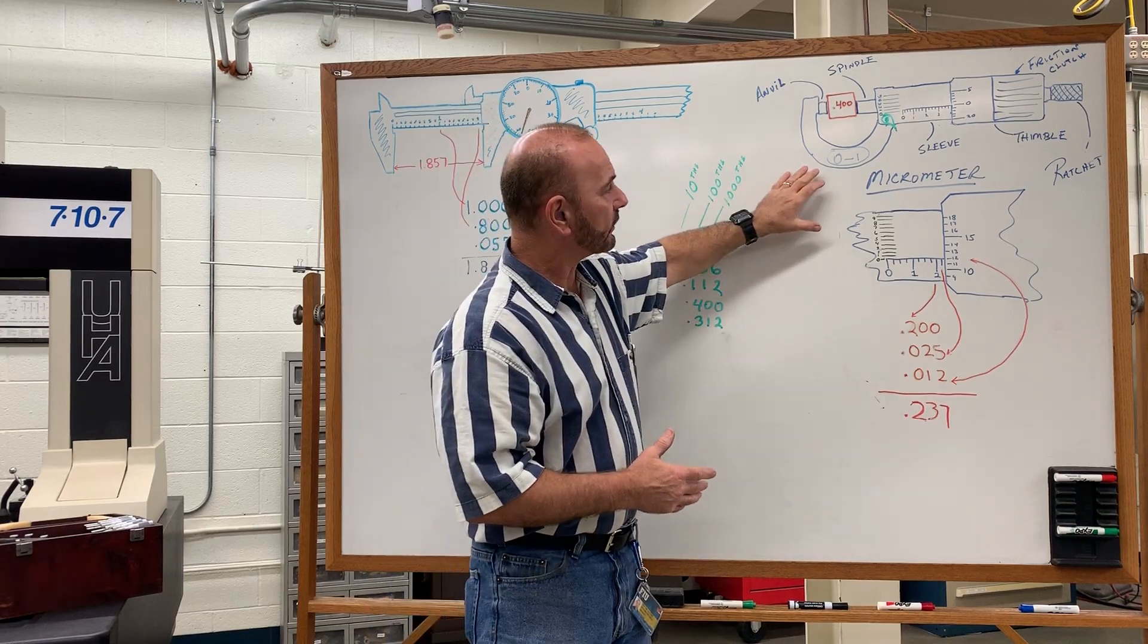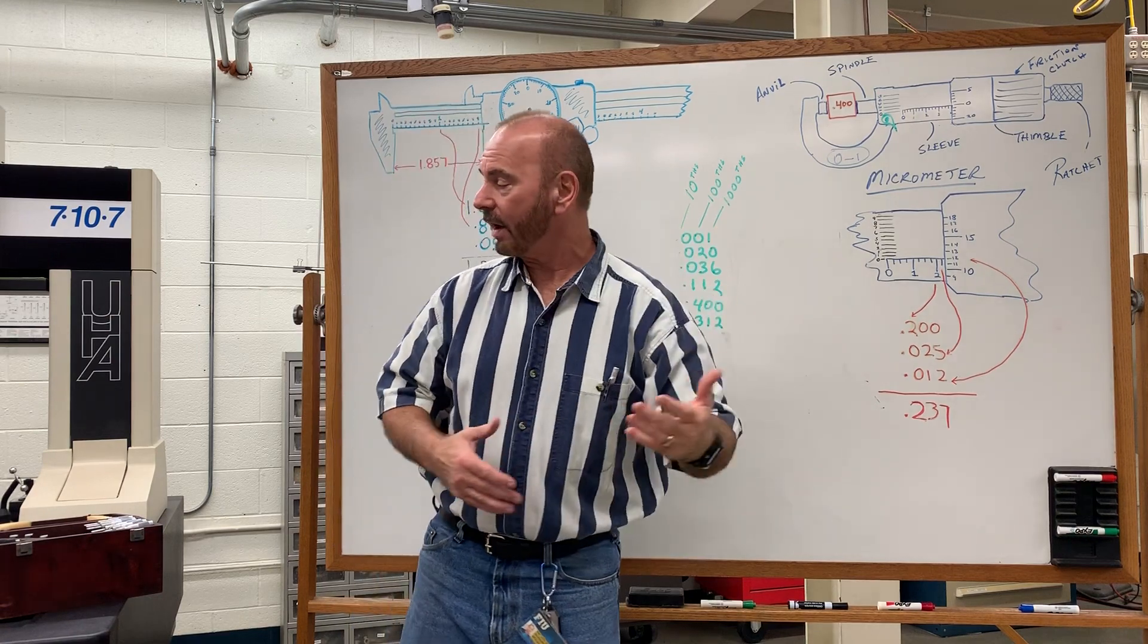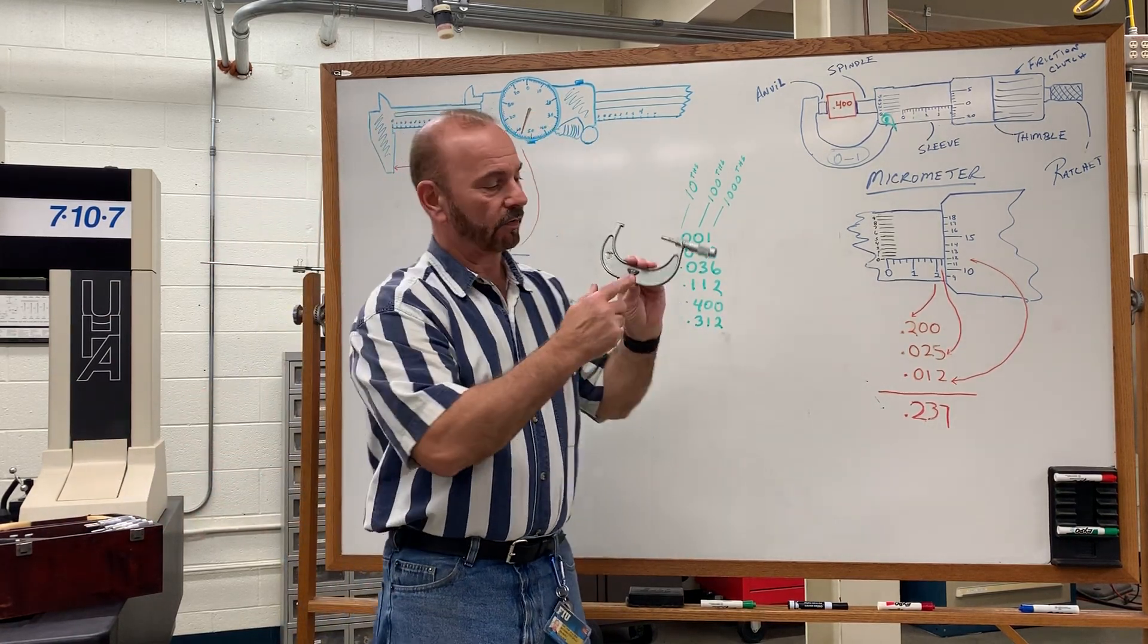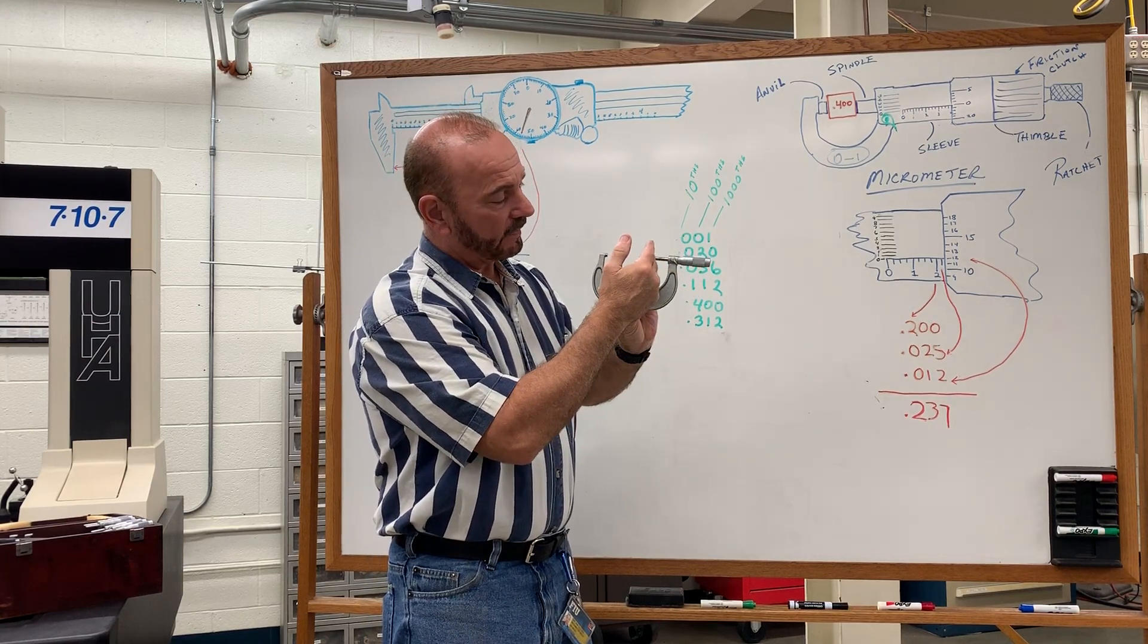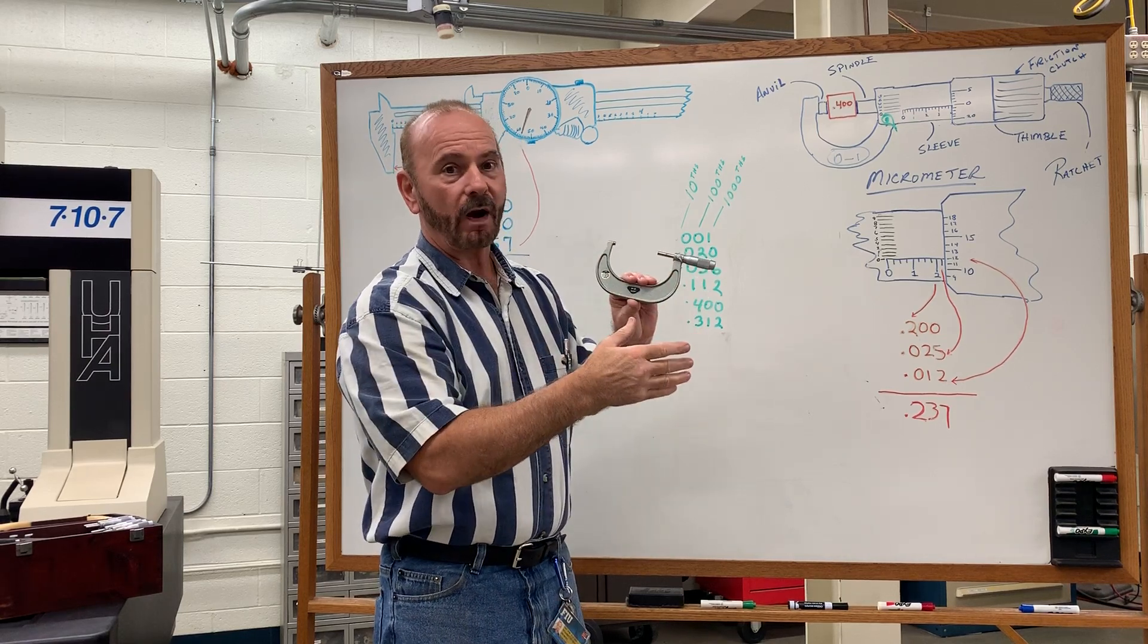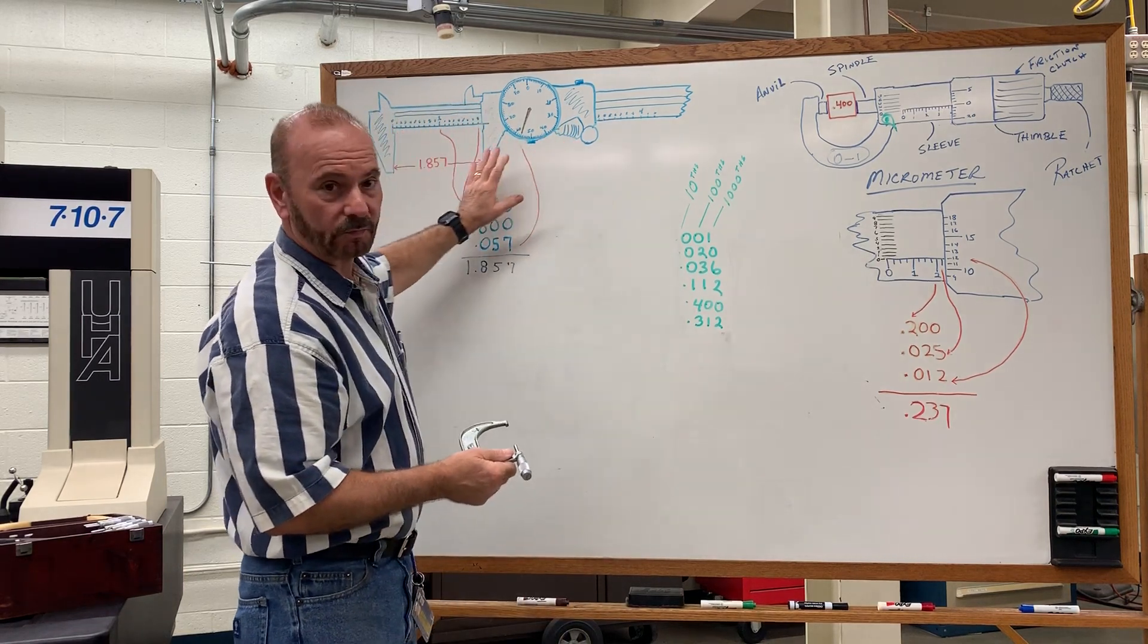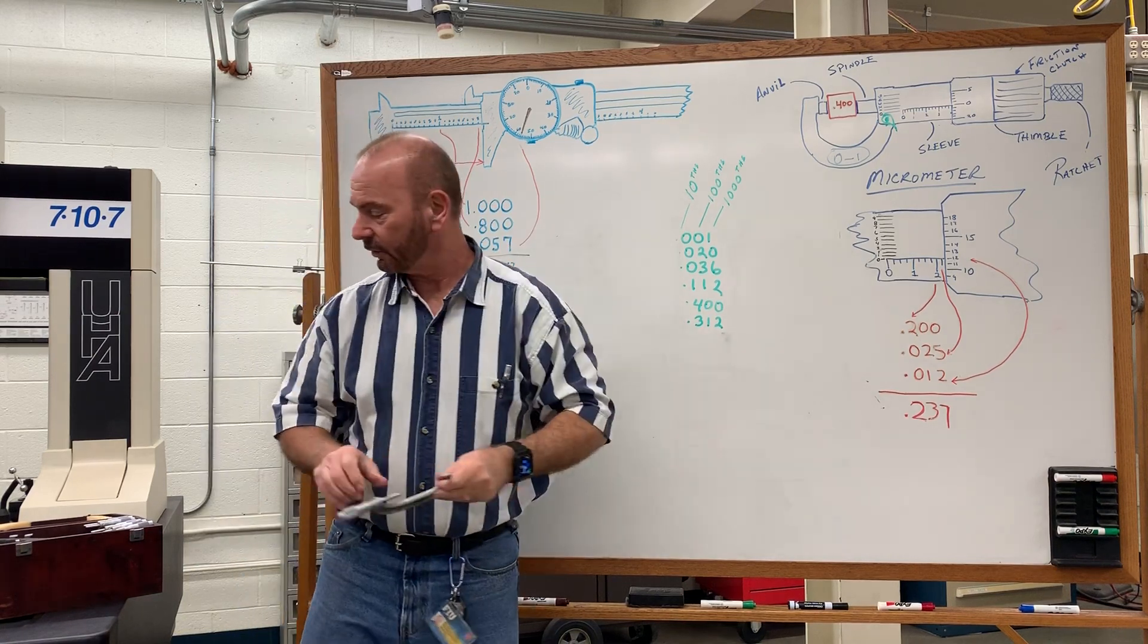So this micrometer here is a zero to one. It can measure from nothing to one inch. If I want to get something to read larger, for instance, this one here is a three to four inch. It still has one inch of travel, but it begins at three inches and then it can measure all the way out to four inches. So you'll need a whole set of micrometers, whereas on the caliper, the caliper can span multiple inches in itself.